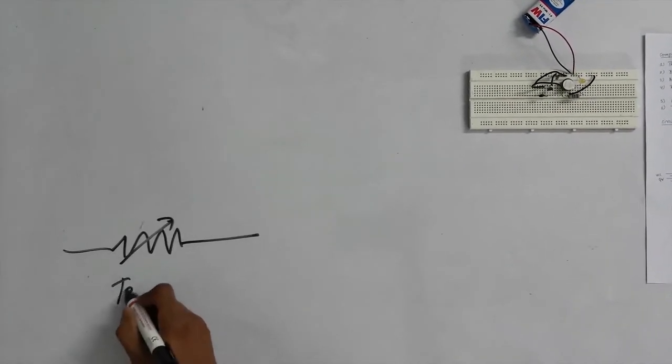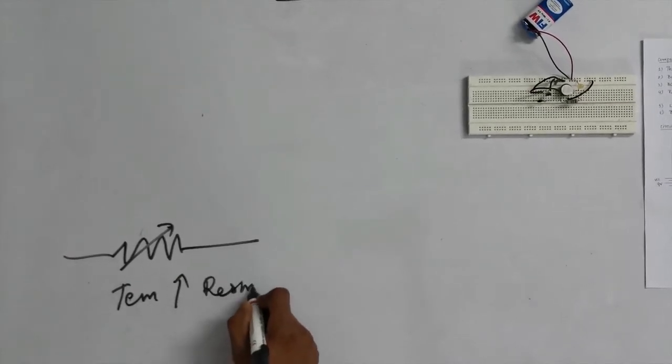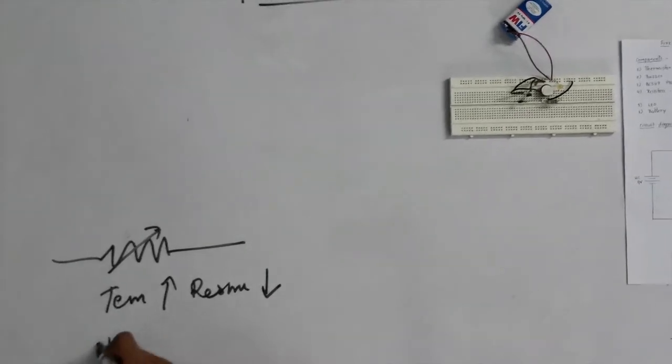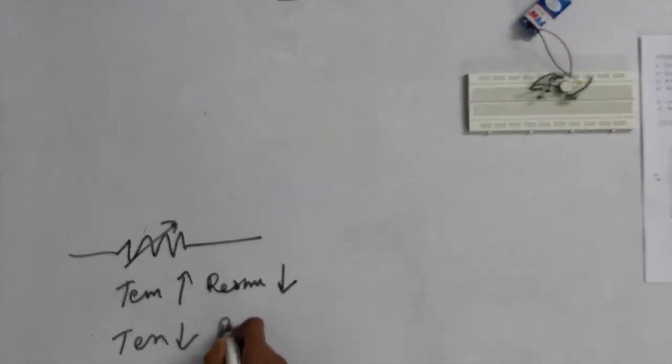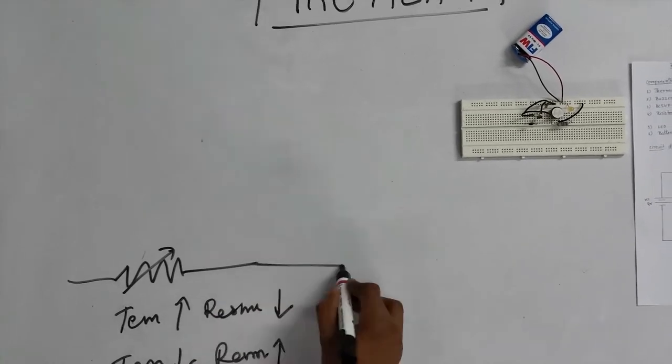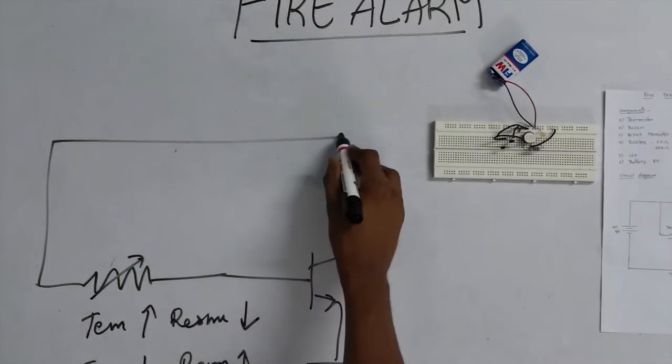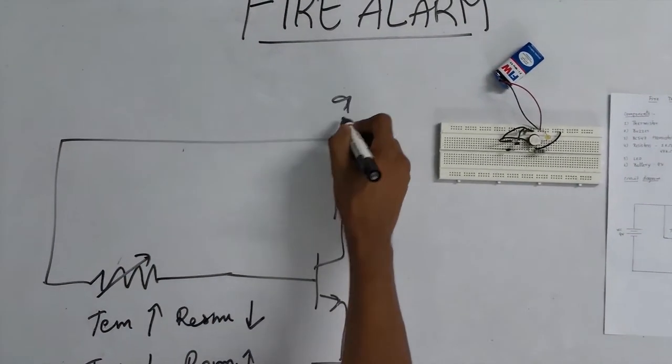If the temperature is high, the thermistor resistance will be low. If the temperature is low, the impedance of the thermistor will be high. This is given to a transistor and the other end is given a supply of 9 volts.